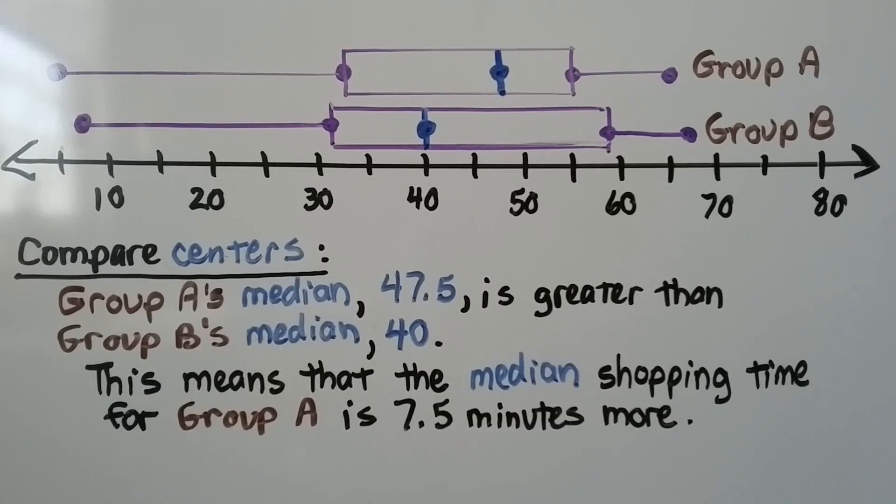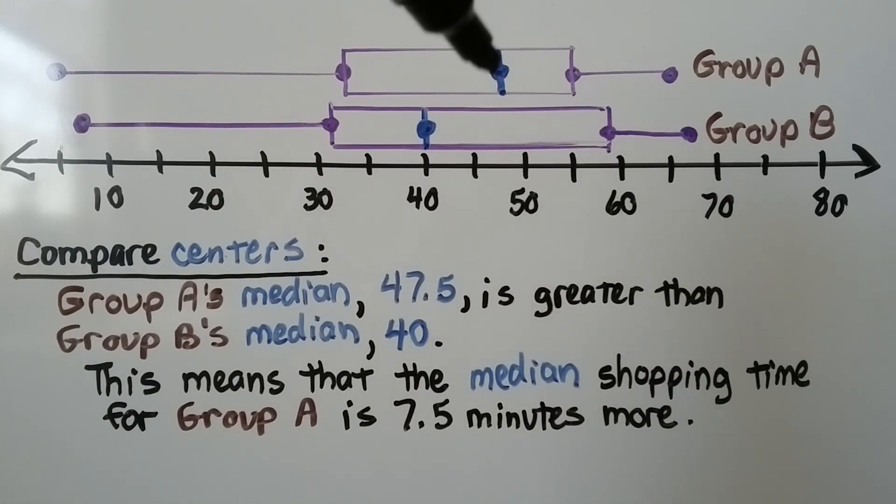We can compare their centers in group A's median, right here. That's at 47.5, and it's greater than group B's median of 40. This means that the median shopping time for group A is 7.5 minutes more.